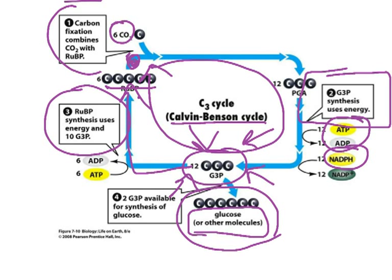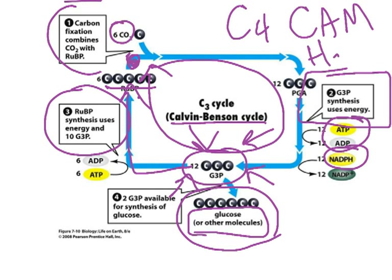The other carbon fixation pathways — the C4 pathway and the CAM pathway — evolved to help the plant conserve water. They relate to the fact that the enzyme RuBisCO will also incorporate oxygen into the cycle. When oxygen enters the cycle, glucose is not made, but ATP and NADPH are still used up, making it a very wasteful process called photorespiration. Be sure to look those alternate pathways over as well.